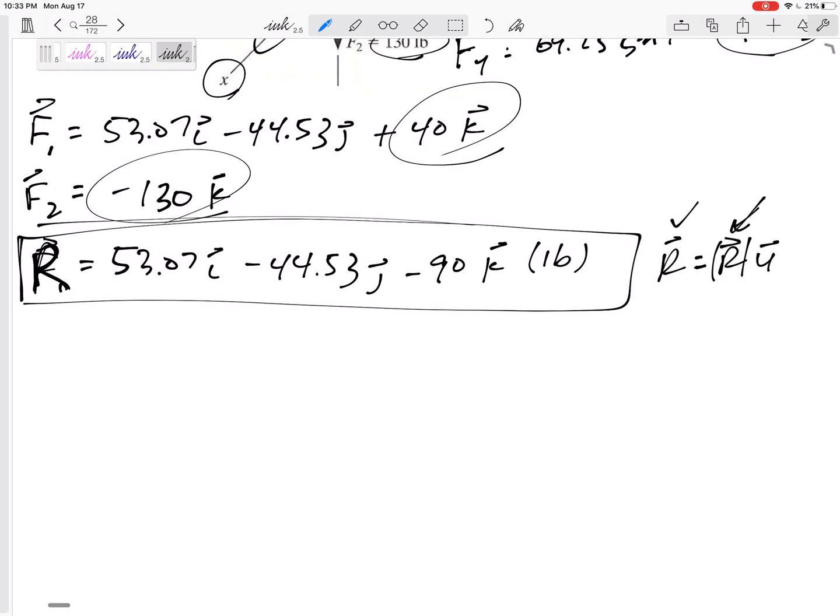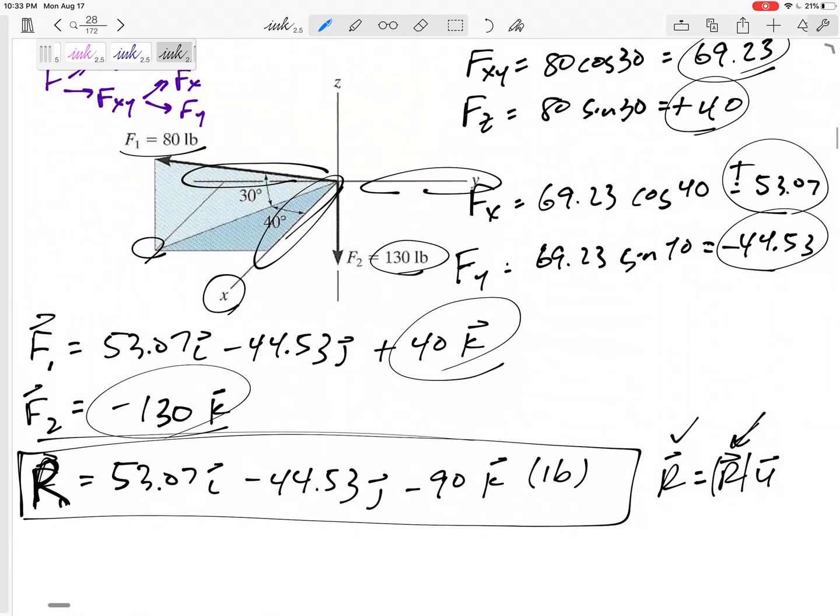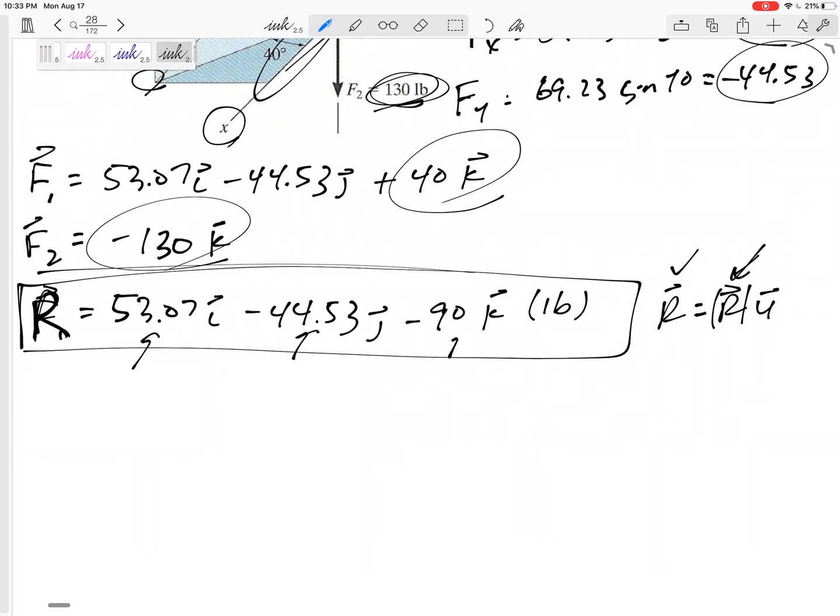Well, almost. It's not 80 because I added this 130. It's not 80 plus 130, it is the magnitude of these. It is 53.07 squared, 44.53 squared, 90 squared.